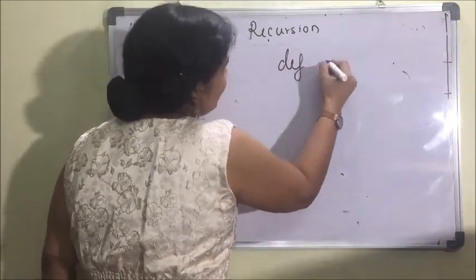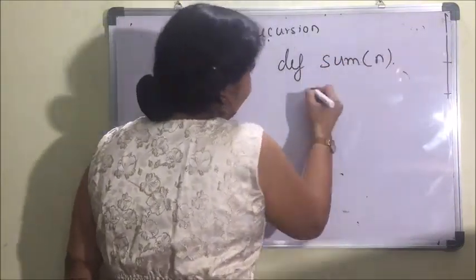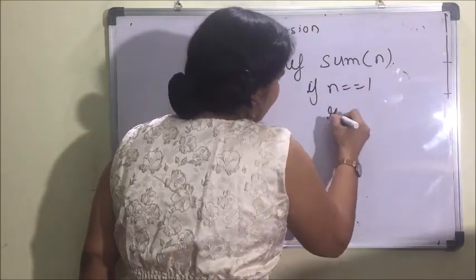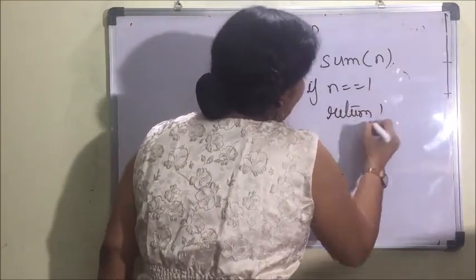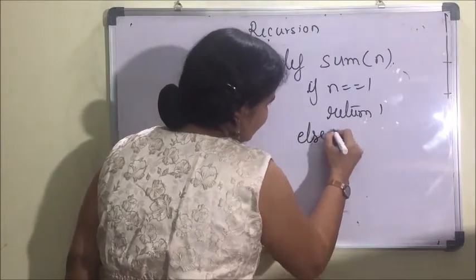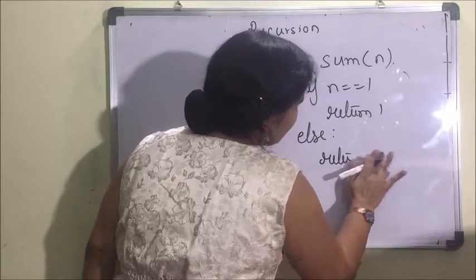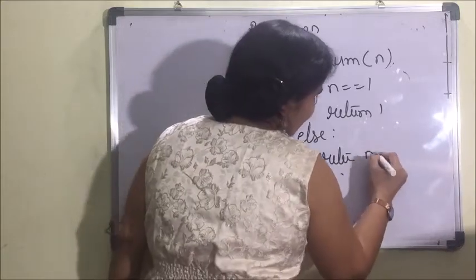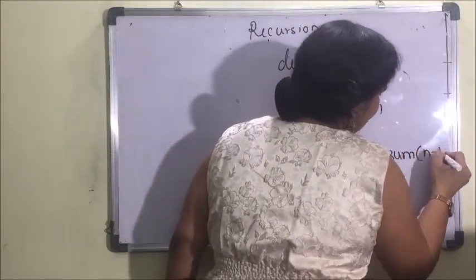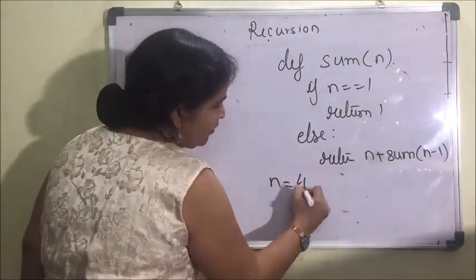...suppose def sum(n): if n equals 1, return 1; else return n plus sum(n minus 1). The value of n we can take as input from the user or we can fix it.